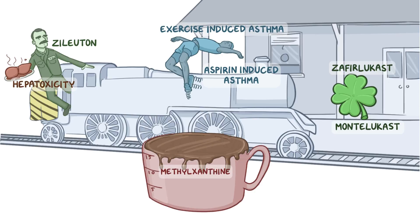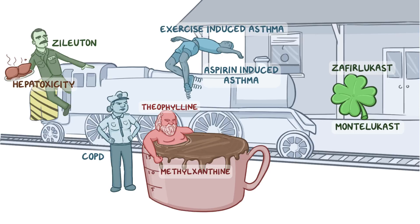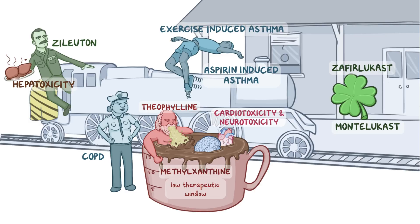Methylxanthine will be represented by a big mug of coffee. Bathing inside the coffee mug is the main drug of the group, theophylline, represented by Socrates — the father of Western philosophy. Since theophylline is effective in treating COPD, let's put an angry police officer next to the mug who's about to arrest him for public indecency. There are measurement lines that max out at 15 on the side of the coffee mug to represent the low therapeutic window, but this mug is way overfilled. All this coffee is too much for Socrates to handle, so he's vomiting into the cup. A human heart and brain are also floating inside to help you remember the cardio and neurotoxicity. Finally, a chrome-colored cell is climbing over the side of the mug trying to get a sip of coffee, because methylxanthines are metabolized by cytochrome P450.